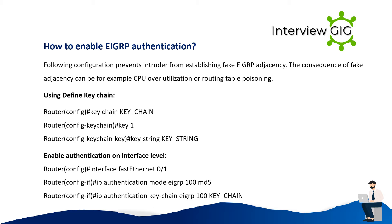How to enable EIGRP authentication? The following configuration prevents an intruder from establishing a fake EIGRP adjacency. The consequence of a fake adjacency can be, for example, CPU over-utilization or routing table poisoning. Using a defined keychain: